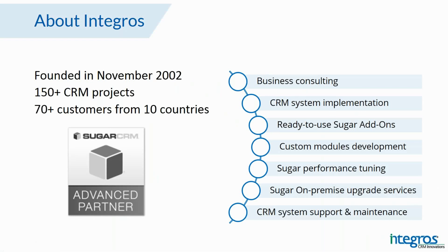Integros has been on the CRM market since 2002 and we have made more than 150 CRM projects for more than 70 customers from 10 countries. As a Sugar partner, we do business consulting, CRM system implementation to reach CRM goals, custom modules development. We are also vendors of ready-to-use Sugar add-ons and the SaaS Visual Designer tool and Logic Builder. Our team is experienced in performance tuning, upgrade services, and we support and maintain the CRM systems of our customers.